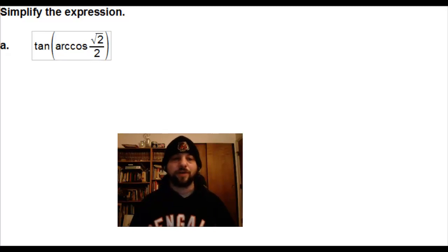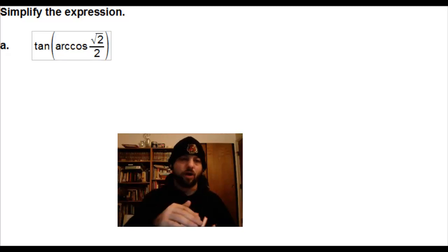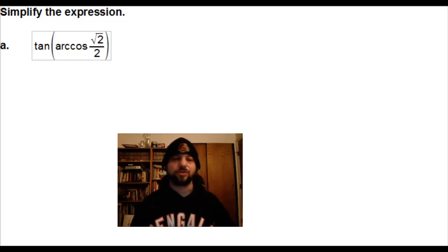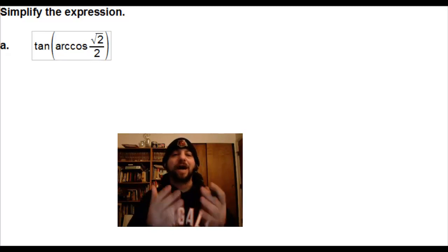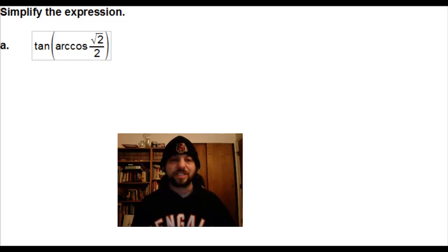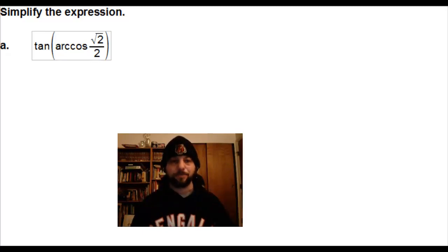Some of you have learned that sine is Y over R, where R represents the hypotenuse, cosine is X over R, and tangent is Y over X. It doesn't matter how you remember it, so long as you understand what these trigonometric ratios actually mean.